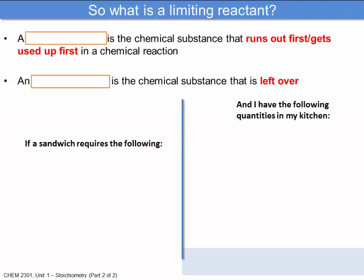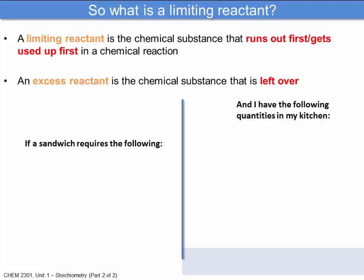As we got into a couple weeks ago, we discussed what a limiting reactant is. We saw that a limiting reactant is the chemical substance that runs out first or gets used up first in a chemical reaction. The opposite of that is the excess reactant — it's the chemical substance that is left over and doesn't get used up in a chemical reaction.